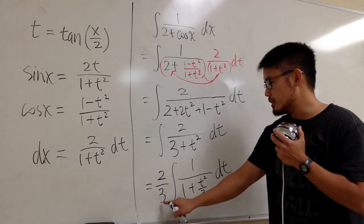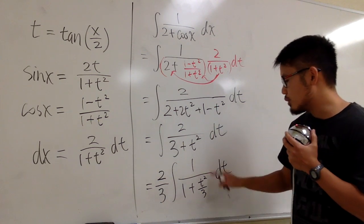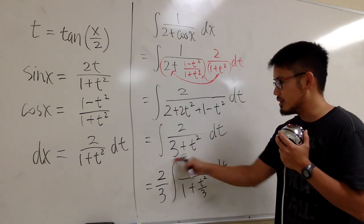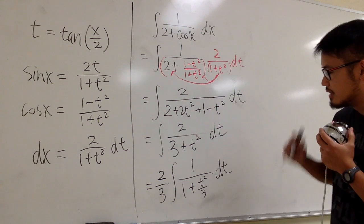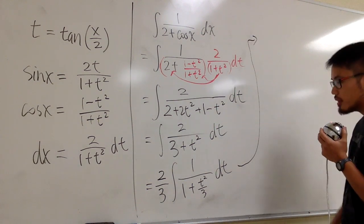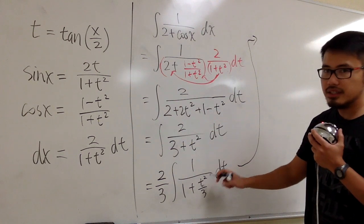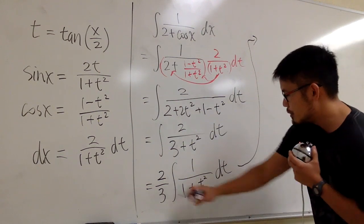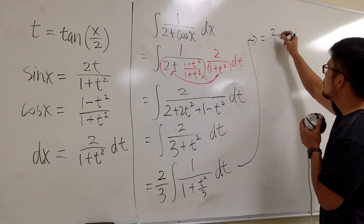Real quick, if you distribute the 3, 3 times 1 is 3, 3 times t squared over 3, we get back to the original denominator like this, right? So this is legit. And now, I have to do a few more things right here. I'm going to look at this as t over something and then square, but then let me write down the rest first.